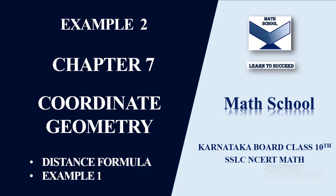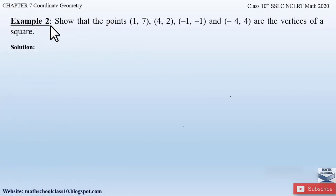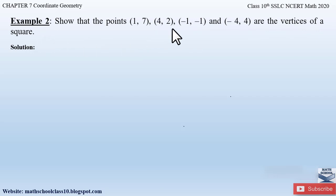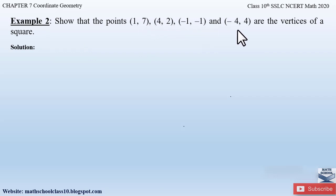So now quickly let us begin with the video. Example 2 from chapter 7 coordinate geometry says: show that the points (1, 7), (4, 2), (-1, -1), and (-4, 4) are the vertices of a square. Here they have given us four points with coordinates and we have to show that these four points form vertices of a square.